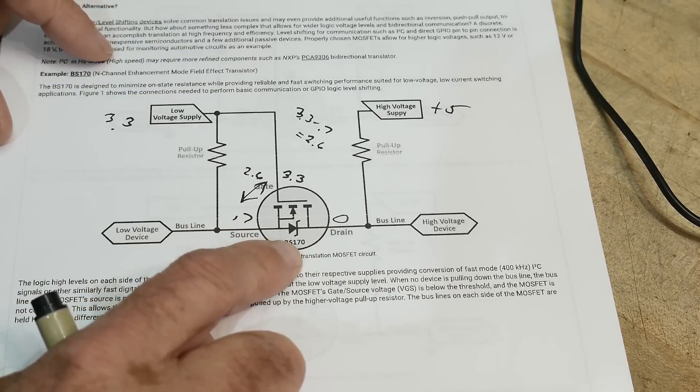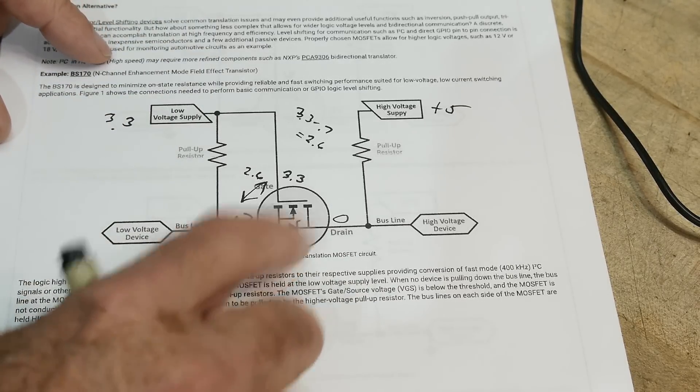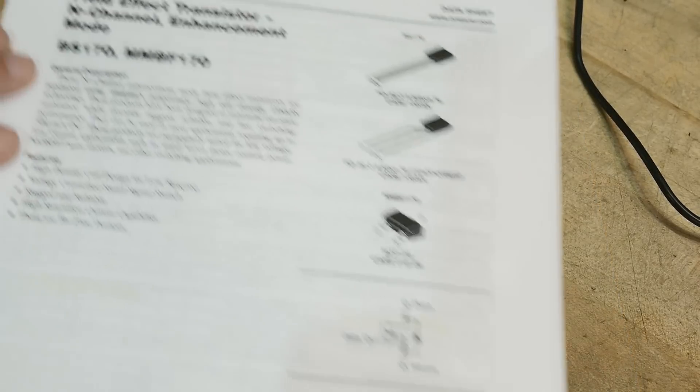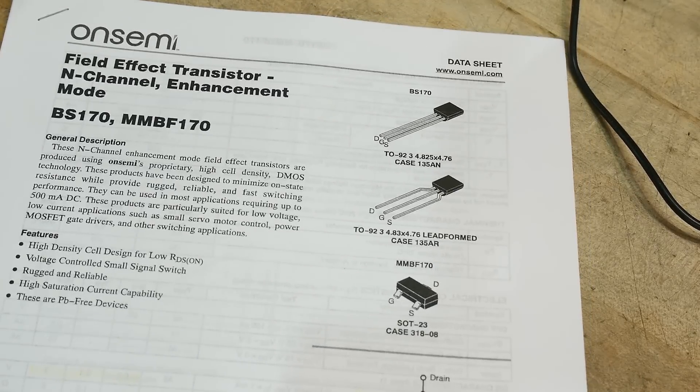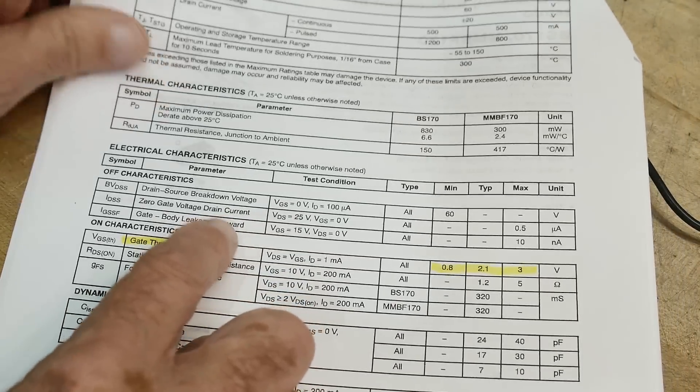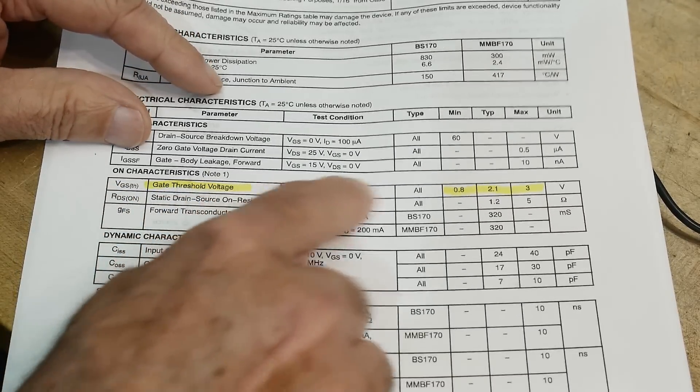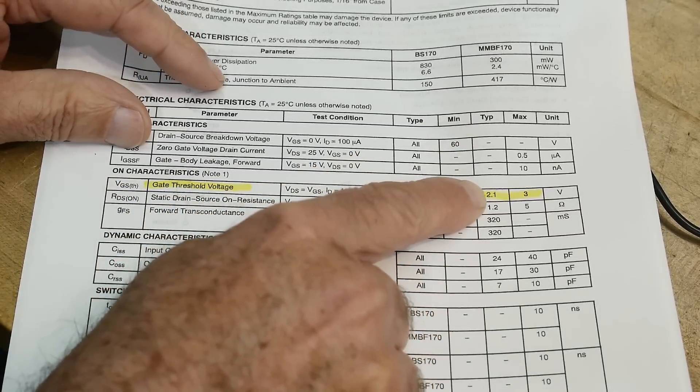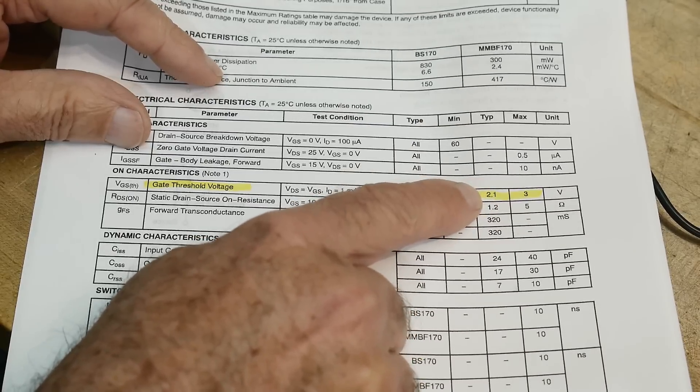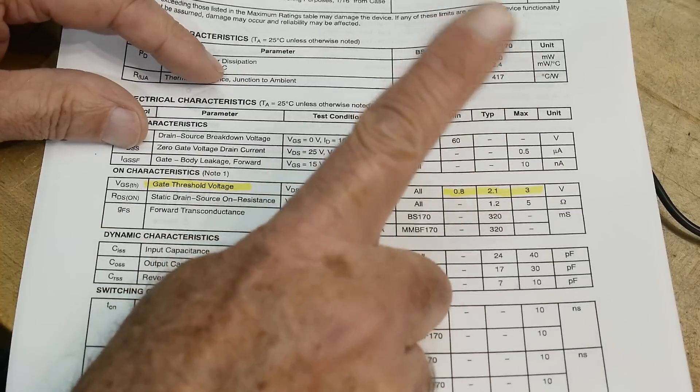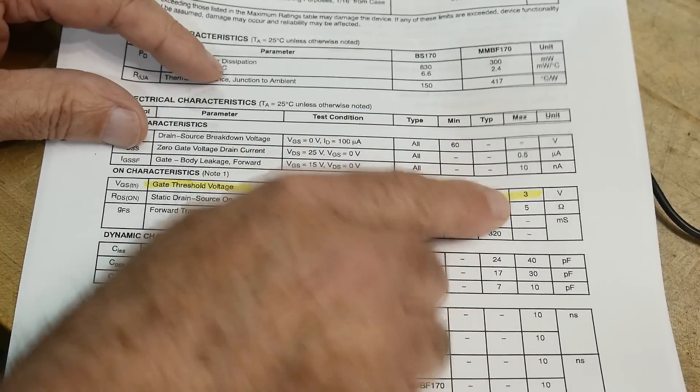So let's look at the BS170. I have the datasheet. The BS170 is here. Digikey says this is just fine. If we take a look at the datasheet, the thing that we're going to be interested in is what's called the threshold voltage. It's the voltage at which the thing starts to turn on. Here is the gate threshold voltage. It says that typical is 2.1 volts. Well, how much do we have? 2.6. So obviously it's going to turn on, right? What about worst case? A good engineer always designs for worst case. In worst case, it's 3 volts.